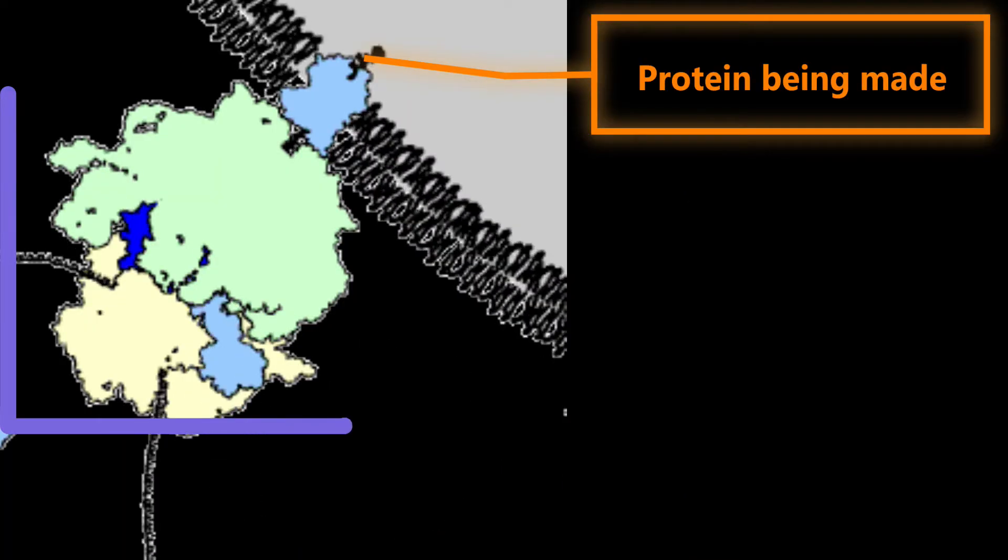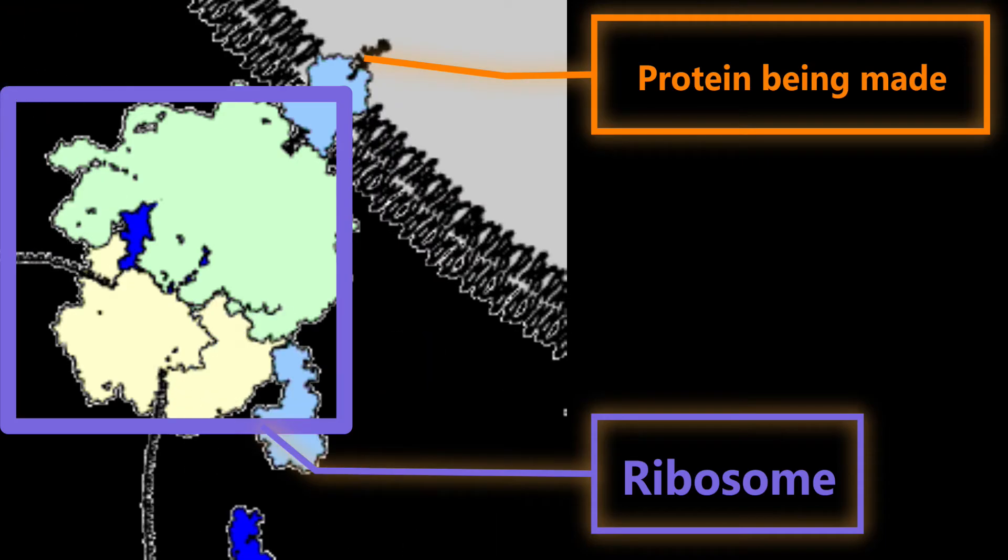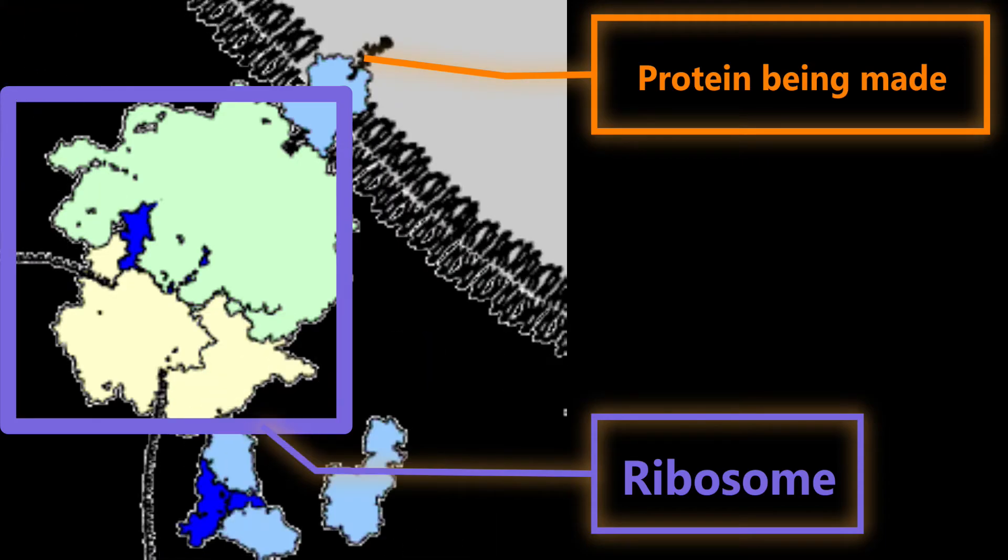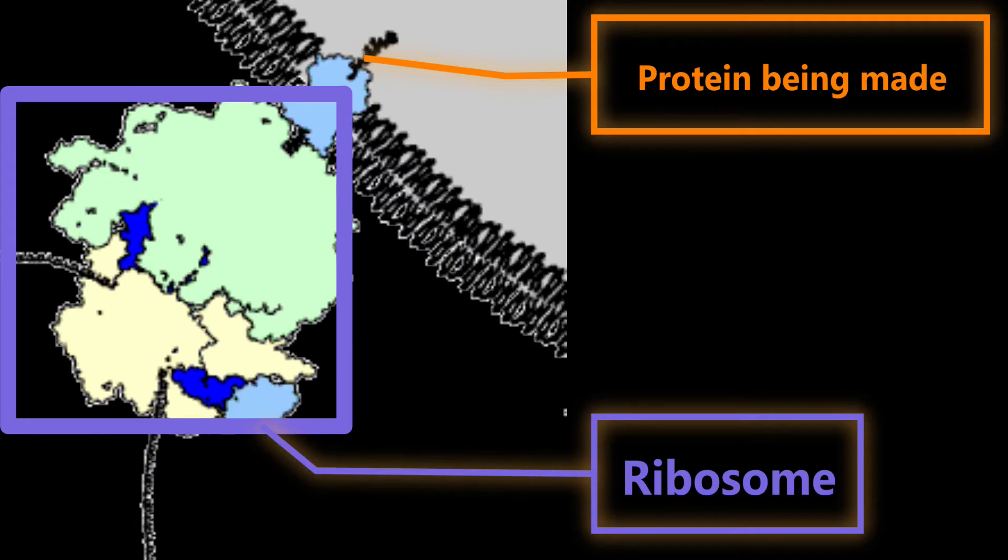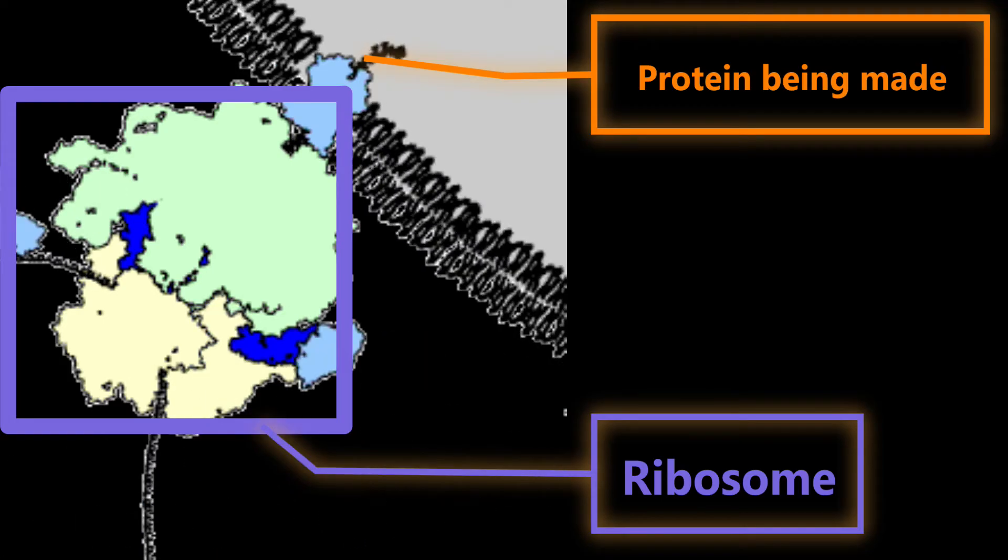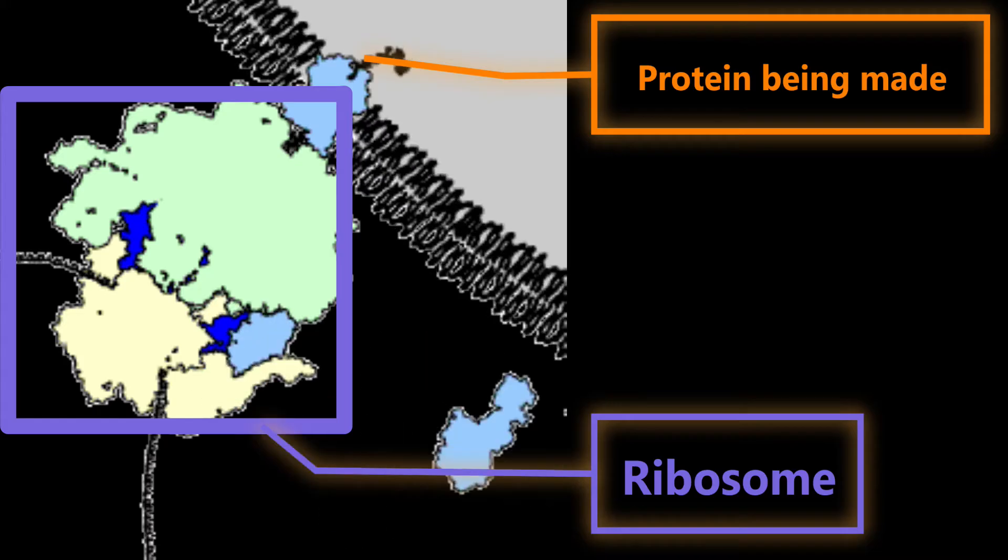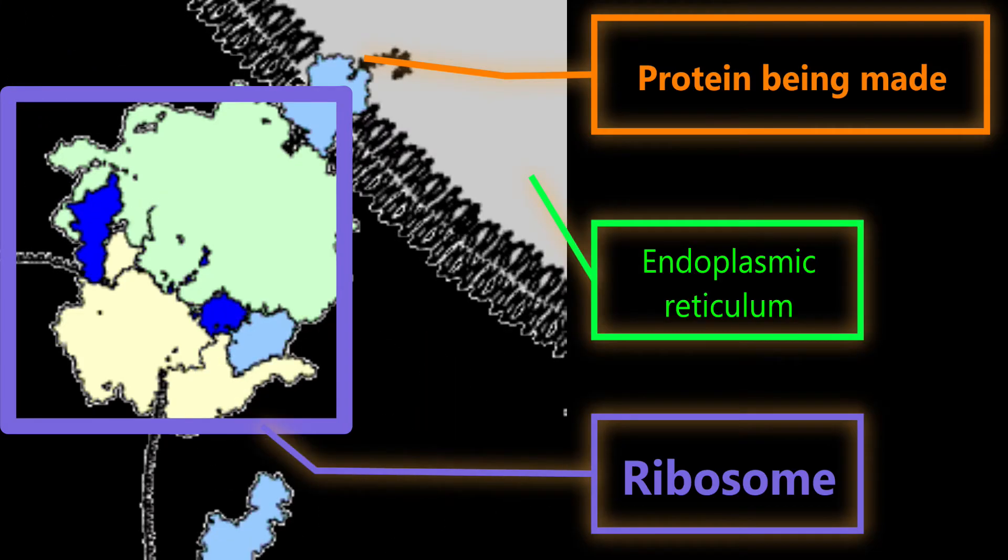Like a 3D printer, once the ribosome gets a copy of a design, it will make an object based on that design. The design sent to the ribosome is a copy of some DNA, and the object the ribosome makes is called a protein. As these ribosomes make a protein, they put it into the endoplasmic reticulum.